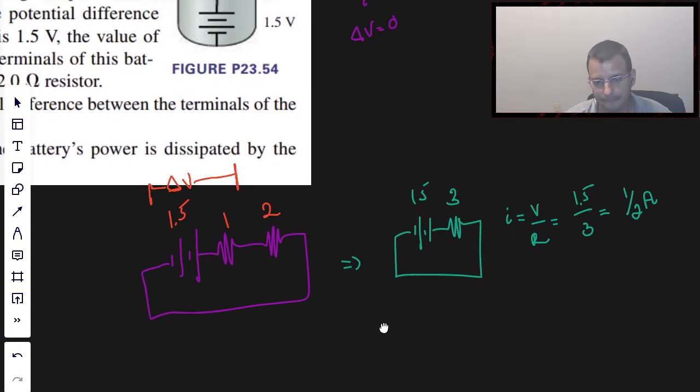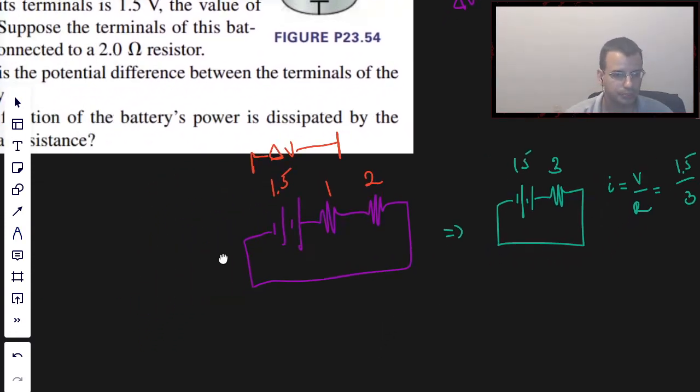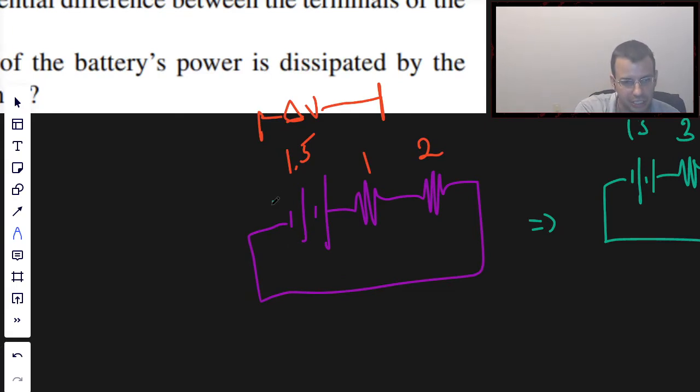So now we go back to our original picture. We're going to say that here is 0, this is going to be 1.5 volts. Then the voltage drop across the resistor is V equals IR. We know the current is 0.5 amps, we know the resistance is 1 ohm. So the voltage drop is 0.5 volts, and the voltage at this point is 1.0 volts.